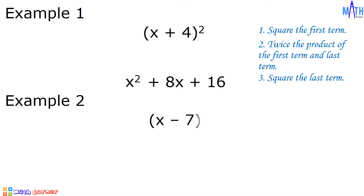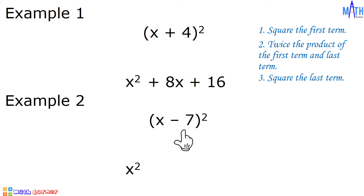Example number two: what is the square of x minus 7? Step number one is square the first term. x times x is equal to x squared. Step number two: twice the product of the first term and the last term. x times negative 7 is negative 7x. Negative 7x times 2 is equal to negative 14x.